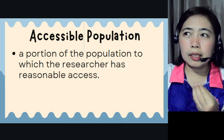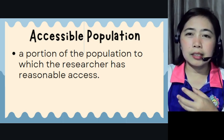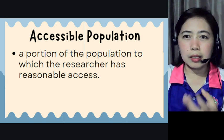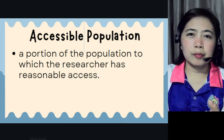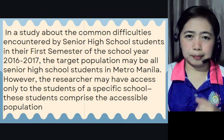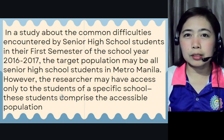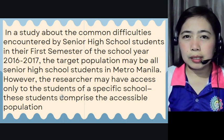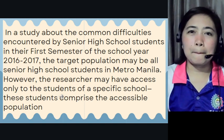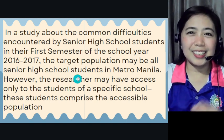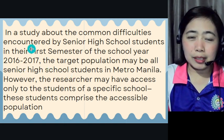Researchers commonly select samples for study rather than the entire population. There is a big population group, and from that, you take a sample — just a portion of that population. This is due to constraints in budget, time, and manpower. A good sample should be representative of the population such that the characteristics of the population, especially those pertinent to the study, are reflected in the sample with a fair amount of accuracy.